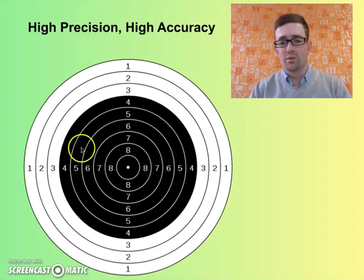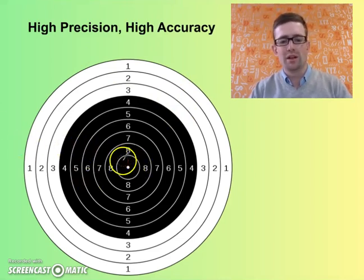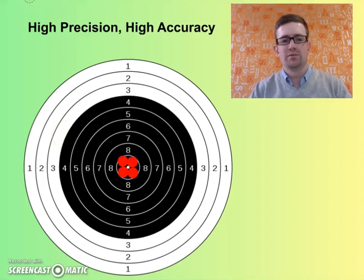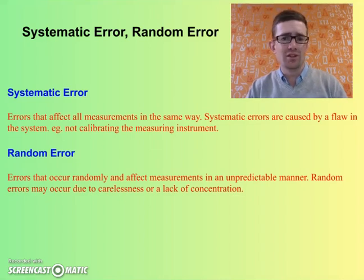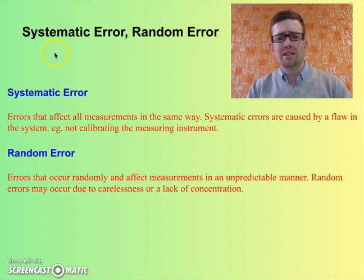And of course, this is what all scientists would be striving for — a situation where you have high accuracy and high precision. So what causes those examples where precision or accuracy is affected? Well, it's something to do with systematic error and random error.